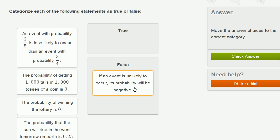Probabilities greater than 0.5 say it's more likely than not. Probabilities less than 0.5, it's more unlikely than not. And probabilities of 0.5 say it's just as likely to happen as to not happen.